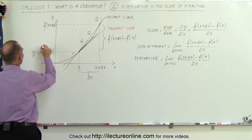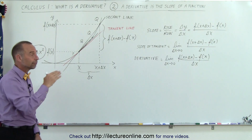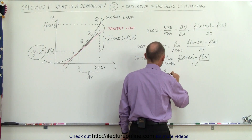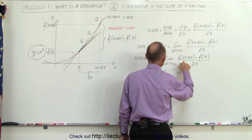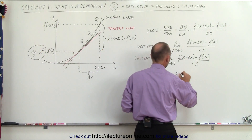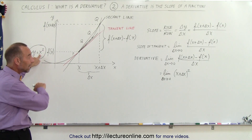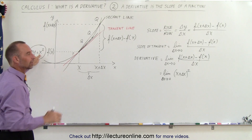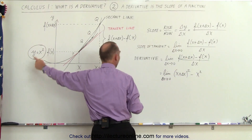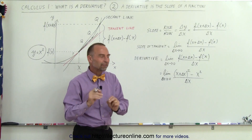Let's go back to the function y equals x squared. We're going to evaluate the function at x plus delta x, subtract from that the function evaluated at x, divide by delta x, and take the limit as delta x goes to 0. This equals the limit as delta x goes to 0 of x plus delta x quantity squared, minus x squared, all divided by delta x — because plugging x plus delta x into x squared gives x plus delta x squared.